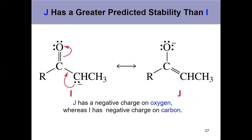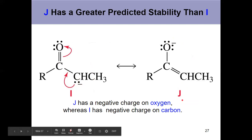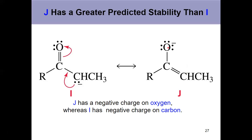In this example, we have a carbanion. Moving that lone pair of electrons over to form a pi bond kicks this pi bond up and moves the negative charge over to oxygen. When oxygen has the negative charge in compound J, that's more stable because oxygen is more electronegative, so it's happier to bear that negative charge. Keep in mind that you can't move electrons through sp3-hybridized carbons. If you can, you typically move electrons towards whatever in the molecule is most electronegative.